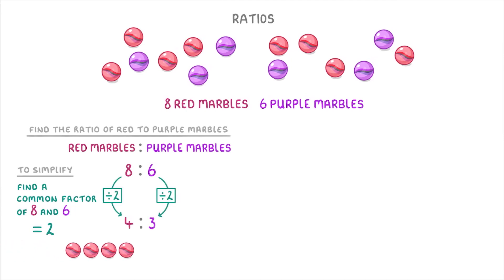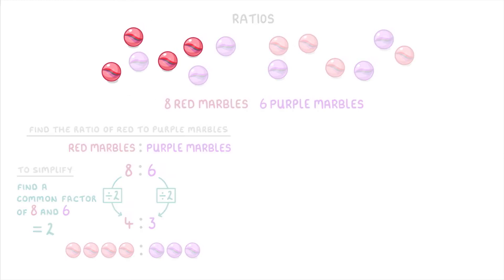Meaning that for every four red marbles, there are three purple marbles. And we can double check that this is true by circling the groups in our example. So we could group these four red marbles with three purple ones, and these four red ones with these other three purple ones.